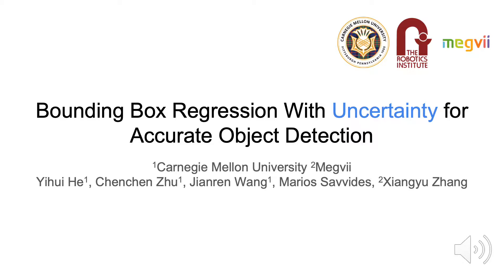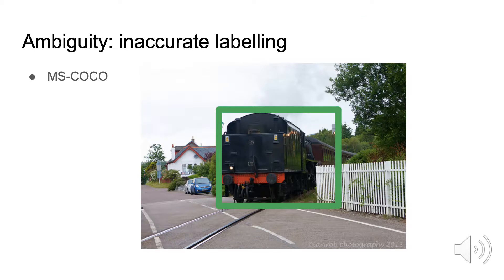Why do we need uncertainty? Large-scale object detection datasets like MS COCO and others try to define the ground truth bounding boxes as clearly as possible. However, we observe that the ground truth bounding boxes are inherently ambiguous in some cases. Specifically, there are various kinds of ambiguities in these datasets.